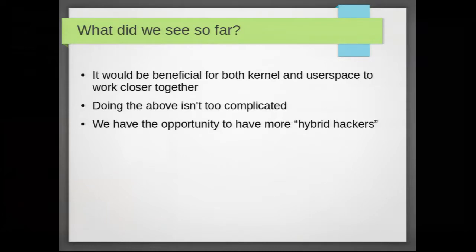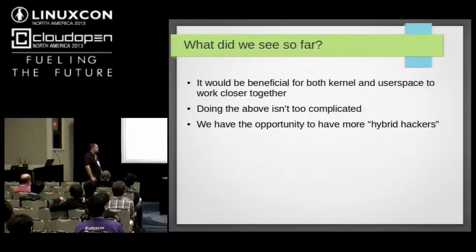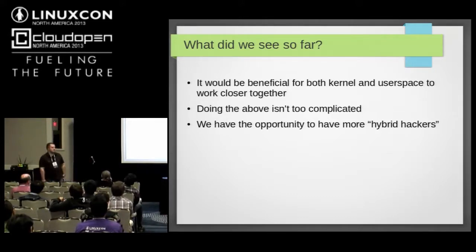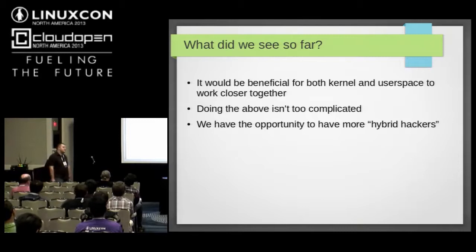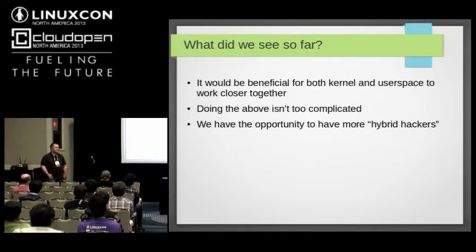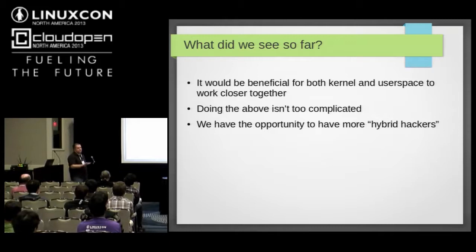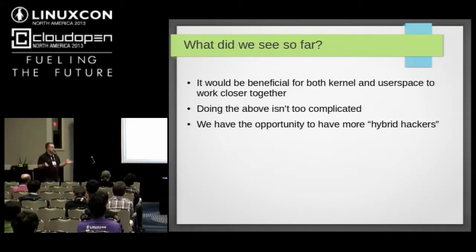What we've seen from these examples is that it would be nice if the kernel and userspace worked much closer together — sharing more code, more headers, more data structures. And doing that sharing isn't too complicated. Tearing out the list code is quite easy; it's not much of a project, but it was too difficult for the Subsurface folks to do. So it has to be much simpler than that. People just need to be able to include list.h and use it in their userspace code — they don't want to jump through hoops to get lists.